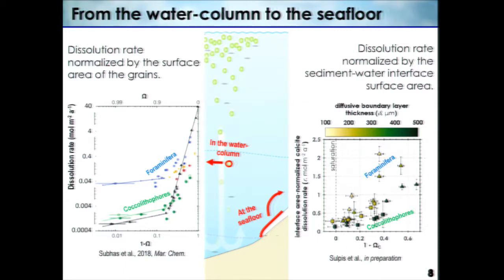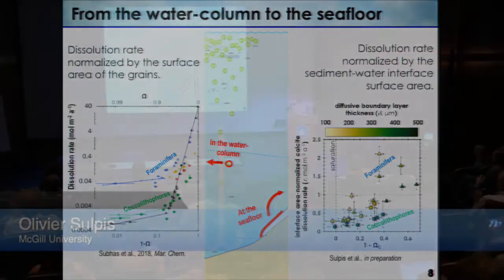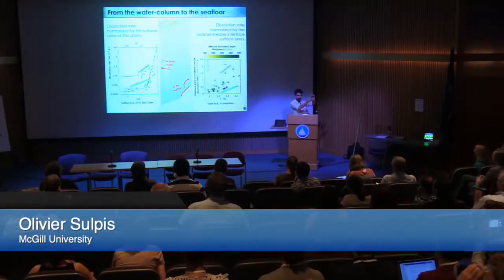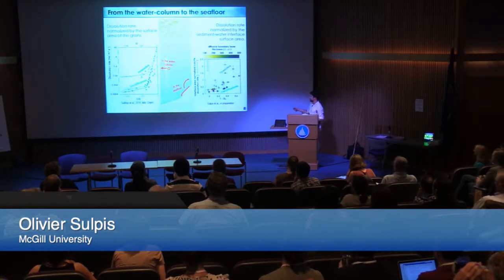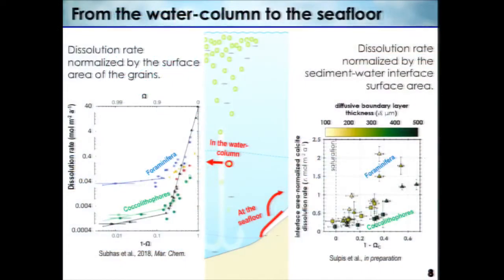So if you have a biogeochemical model, you may want to look at these rates to update it a little bit. And this is what it looks like when we look at dissolution fluxes from the sediment. Here we are normalizing the dissolution rate by the sediment-water interface instead of by the surface of each grain. The fluxes are roughly the same magnitude, they look a bit more linear — typically like a diffusive flux would look.